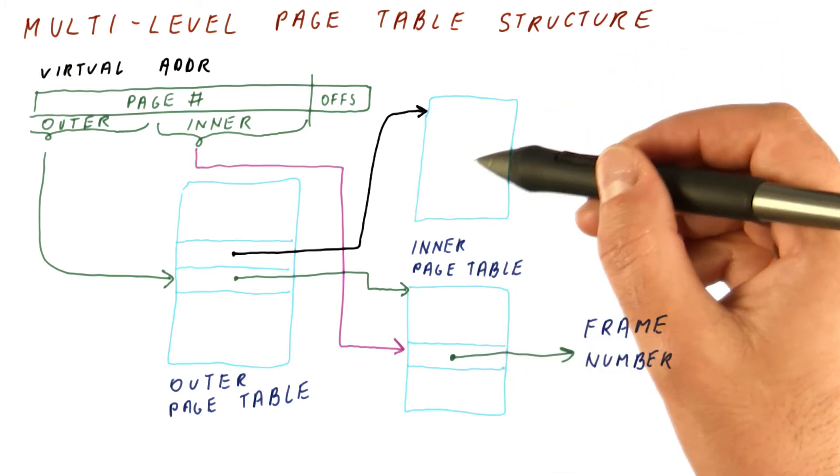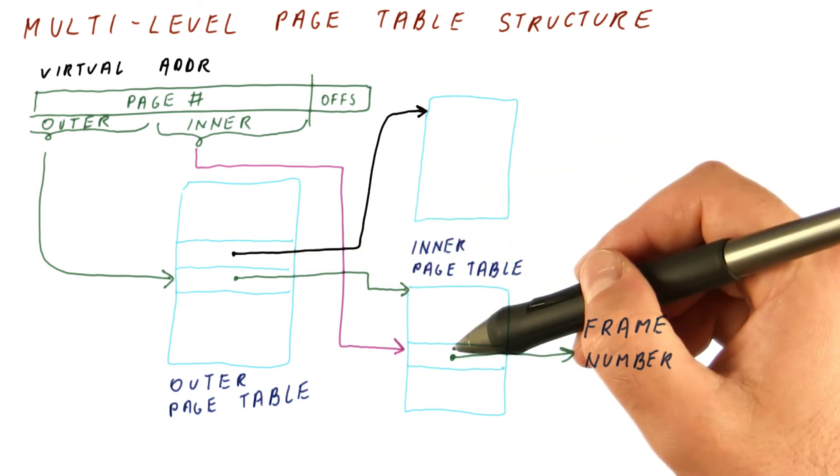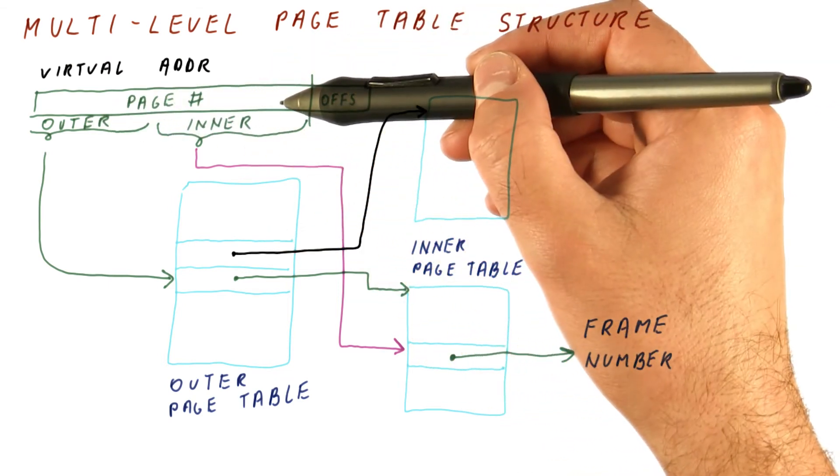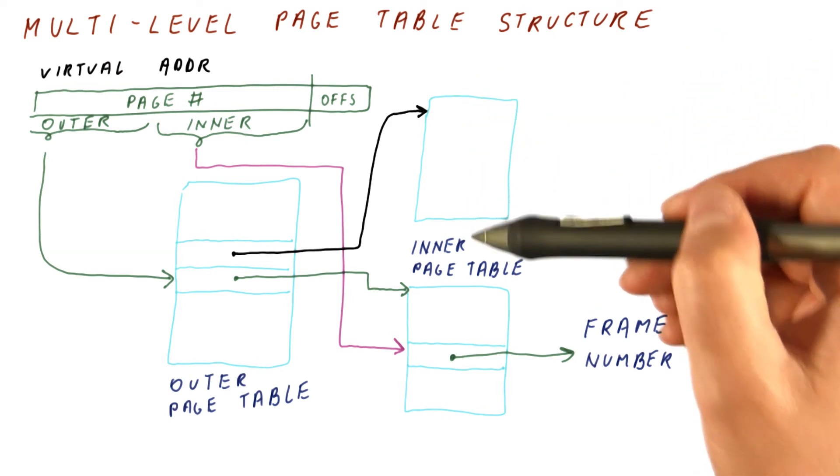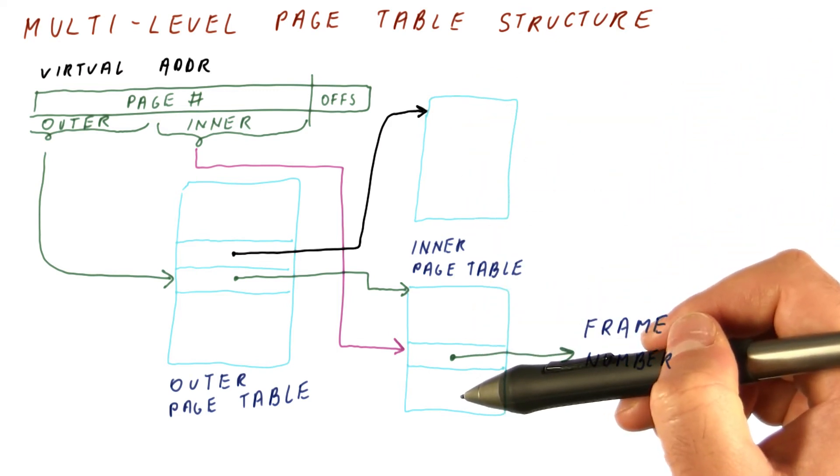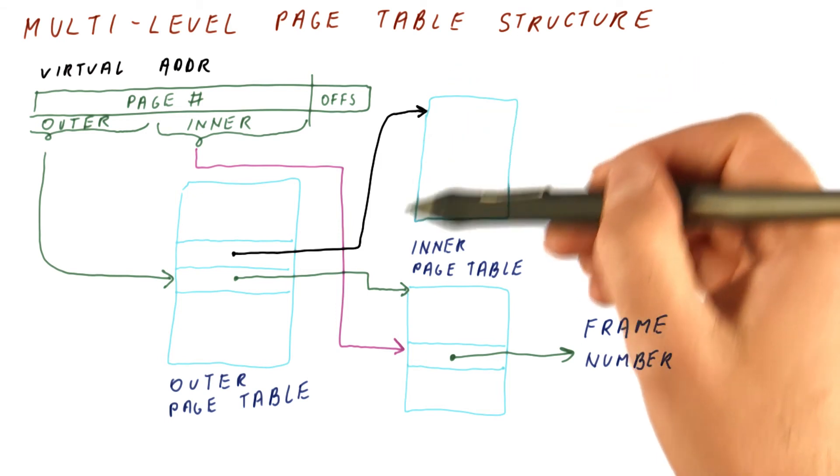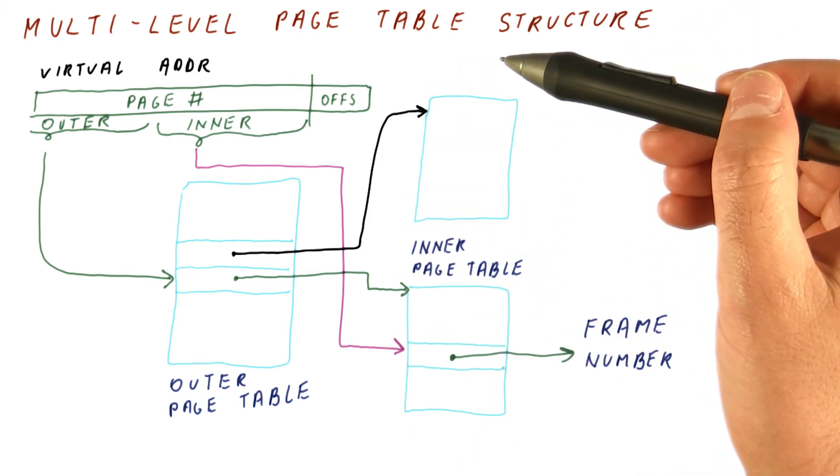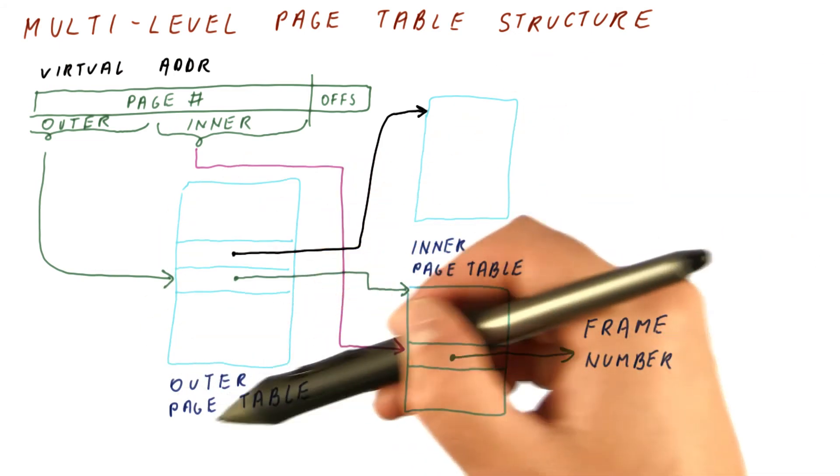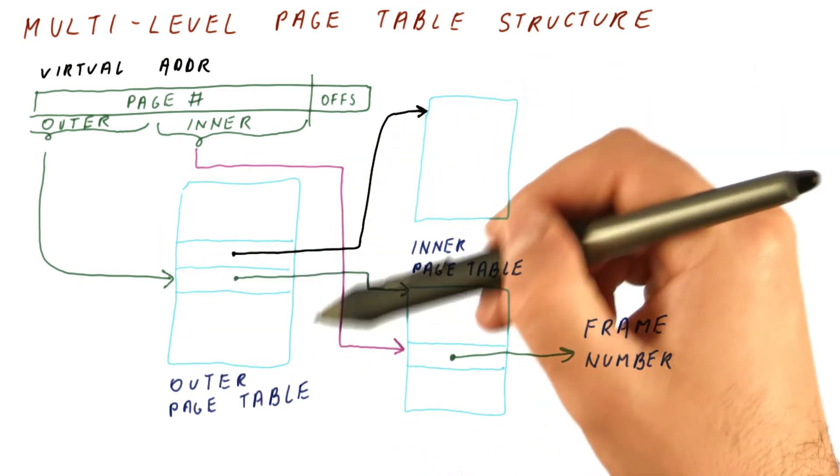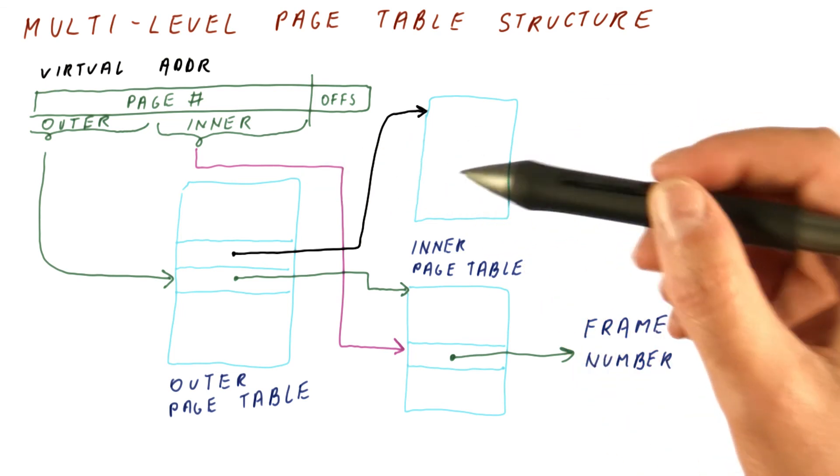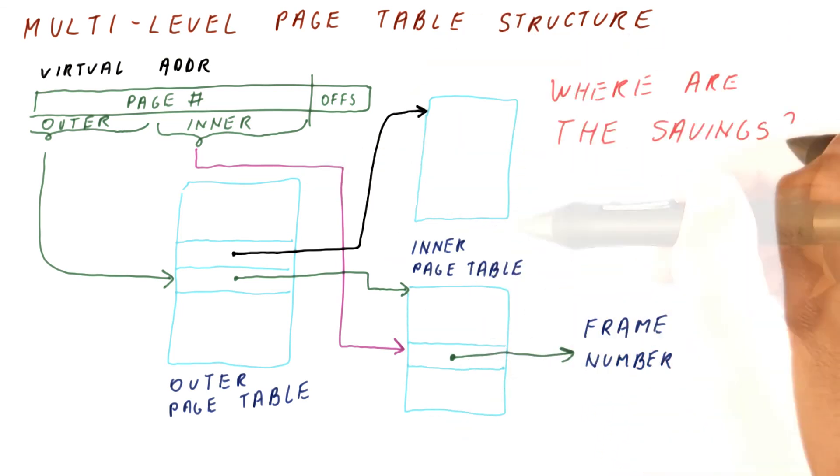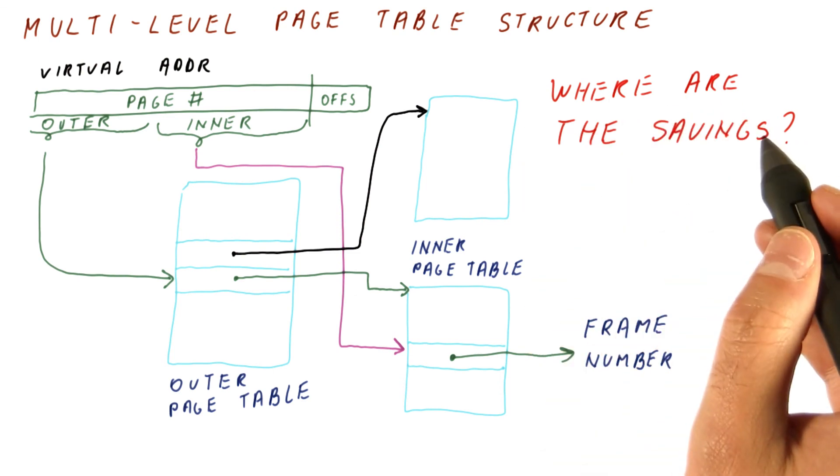So it seems like this is just a more complicated way to access the page table, but still for every possible page number, we will have a frame number in one of the inner page tables. The total size of the inner page tables will be the size of the original flat page table, and we still have added the outer page table which we didn't have before. So pretty much we still have the same number of entries total here, and we have added something. So where are the savings?